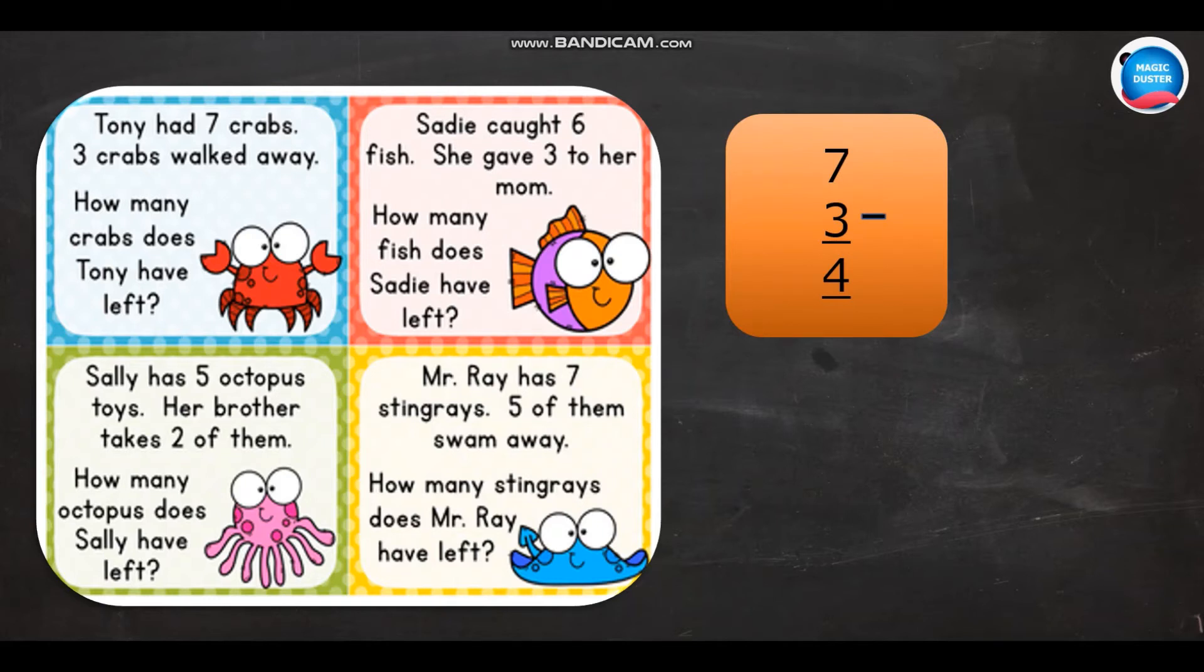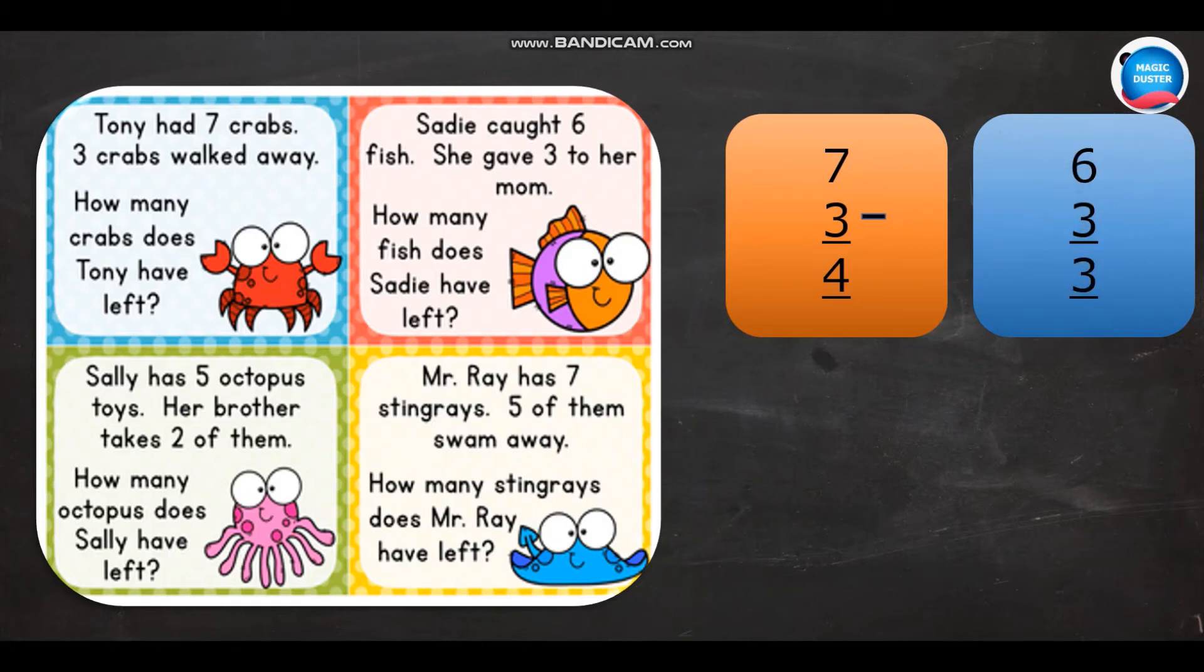Then, the second one. Sadie caught six fish and she gave three to her mom. How many fish does Sadie have left? To find out the answer, I should do the subtraction: six minus three. So, the answer is three.